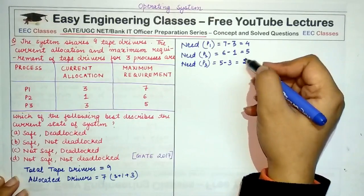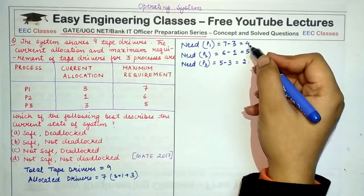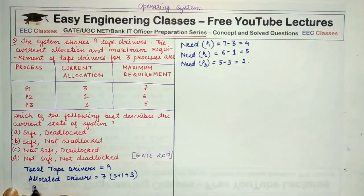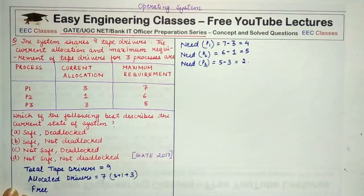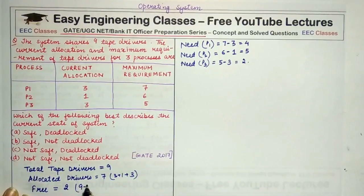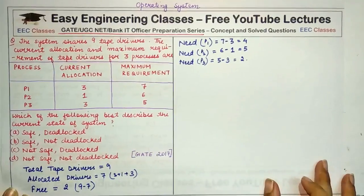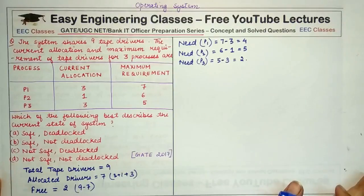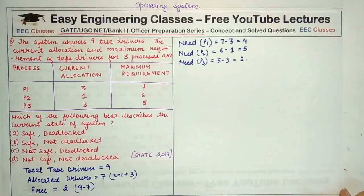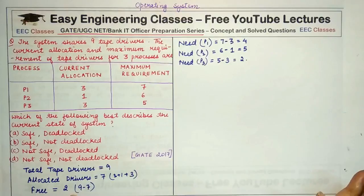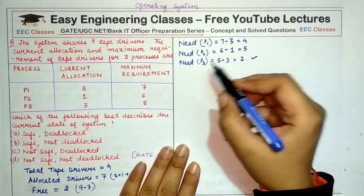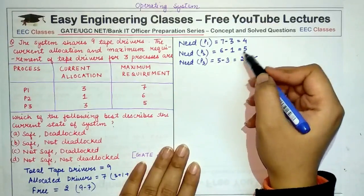So P3 requires 2 more tape drivers to complete its execution. P2 needs 5 more tape drivers and P1 needs 4 more. So if total are 9 and allocated drivers are 7, free tape drivers currently are 2. So if there are 2 non-allocated or free tape drivers, then we can use these tape drivers to allocate it to a process that needs 2 or less than 2 tape drivers to complete its execution. And we can clearly see here that P3 is a process that needs 2 more resources or 2 more tape drivers to complete its execution.